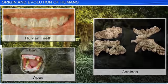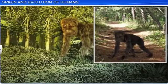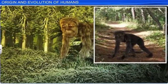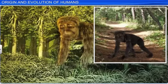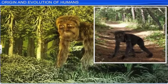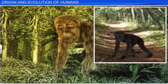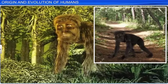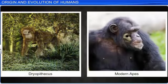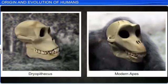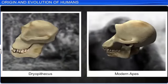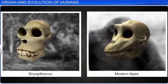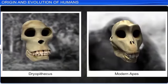Moreover, the skull of Dryopithecus did not have the well-developed crests and massive brow ridges found in the skulls of modern apes. Another man-like primate that lived in the early Pliocene epoch of the Cenozoic era, about 12 million to 14 million years ago, was Ramapithecus. Its fossils were found in the Shivalik Hills in northern India and eastern Africa in the beginning of 1932.